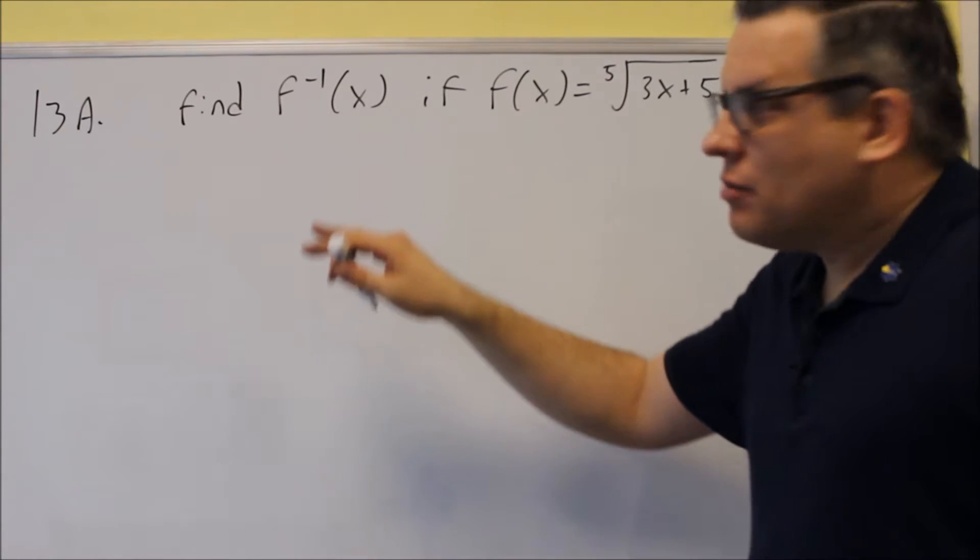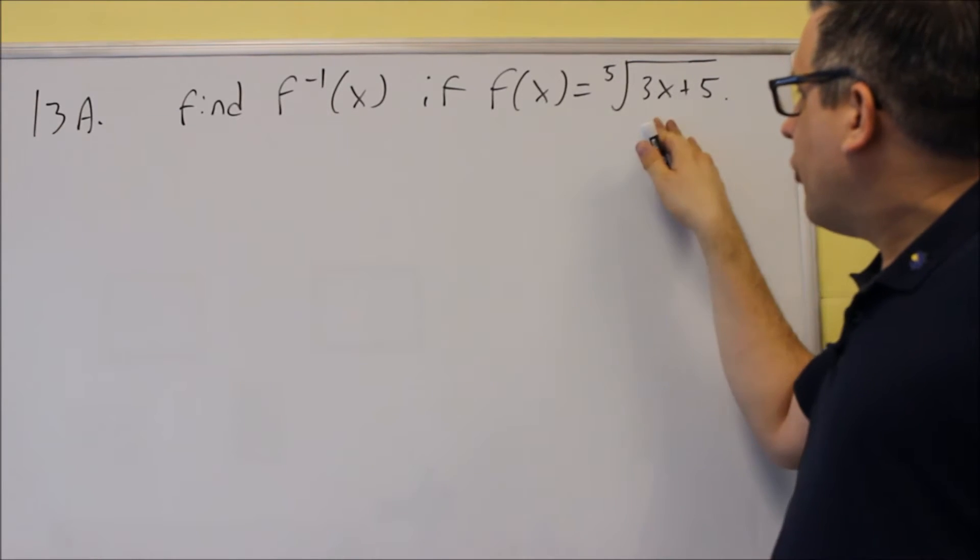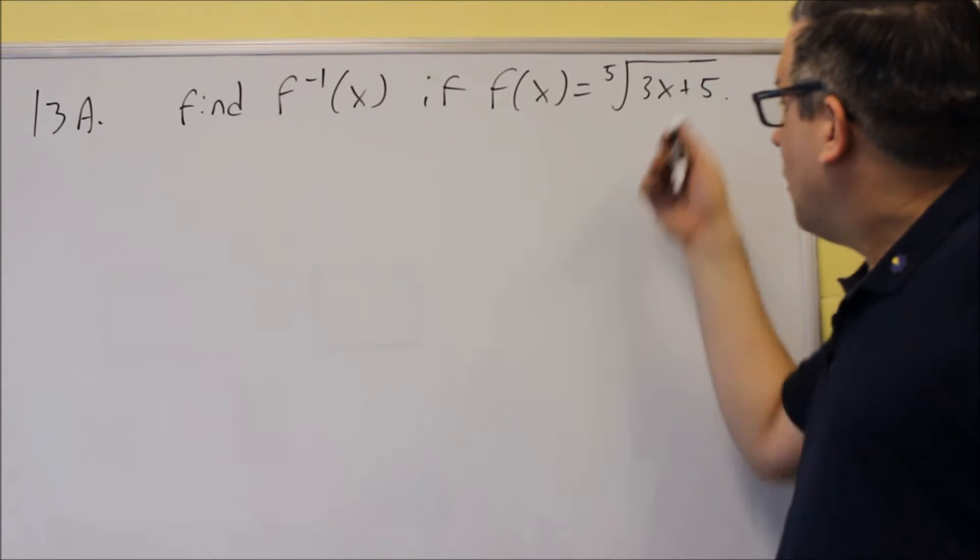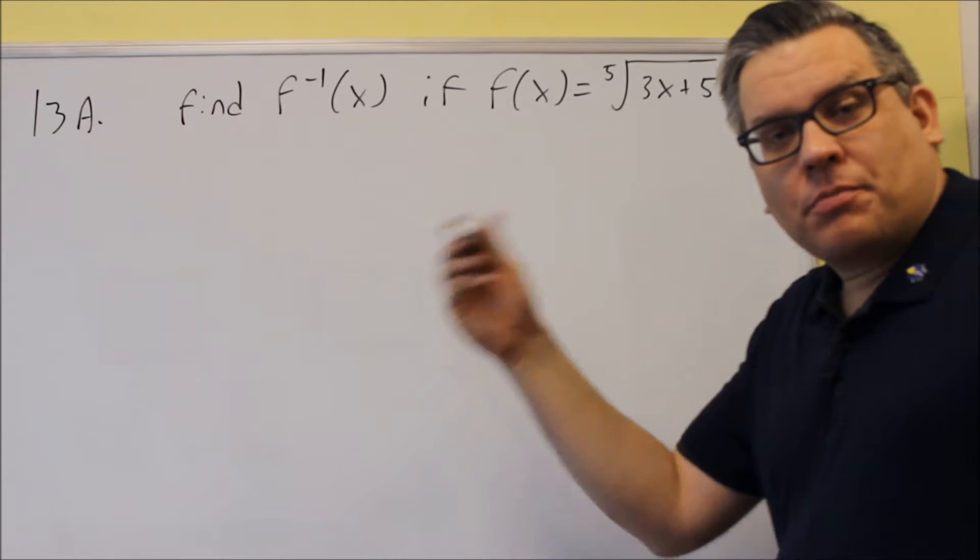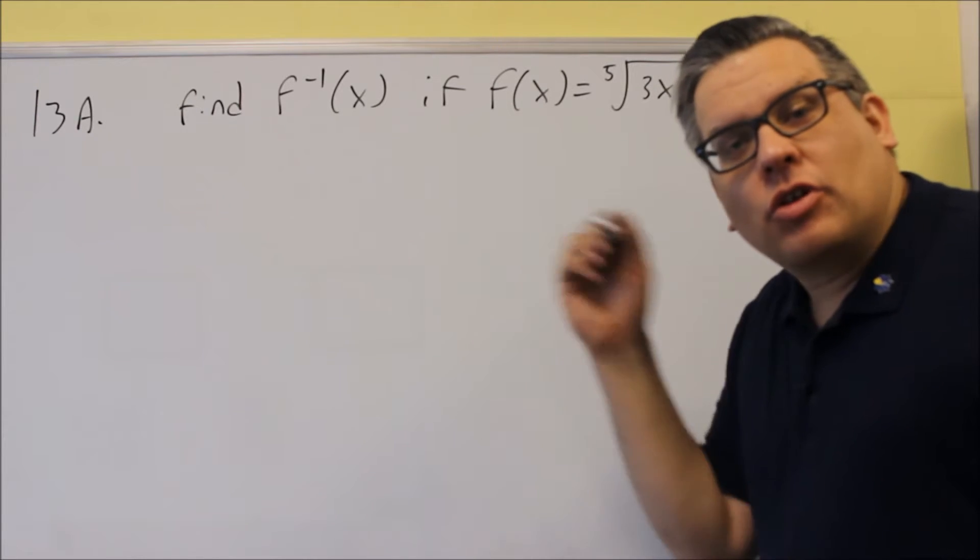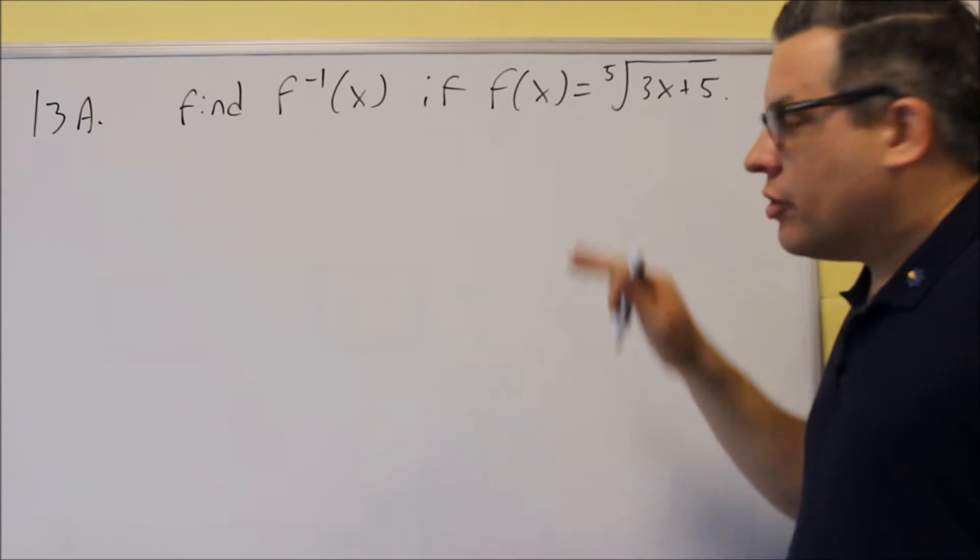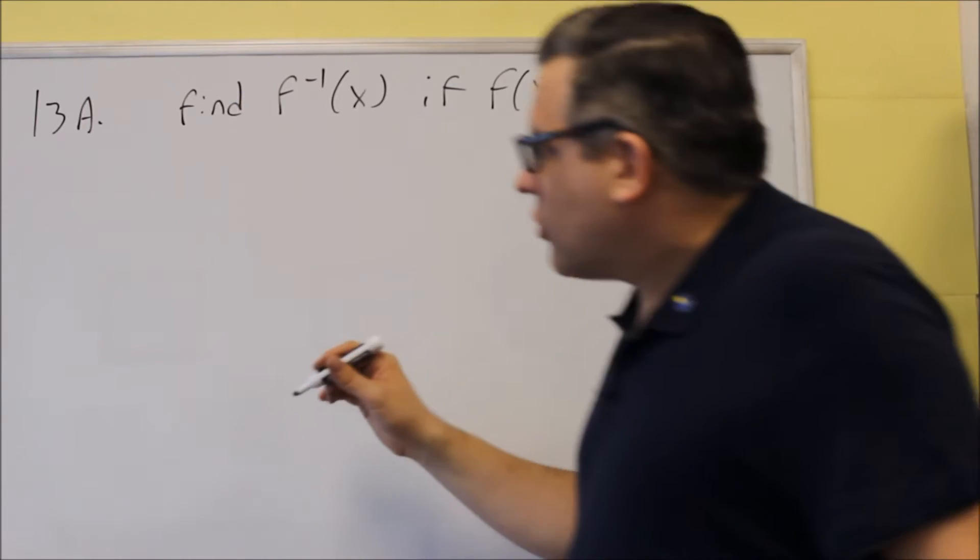For 13A, we want to find the inverse if the original function was the fifth root of 3x plus 5. In the notes I talked about there's a four-step process that you go through in order to do that. So I'm going to go ahead and follow those four steps.